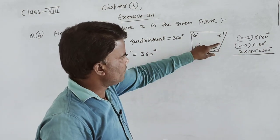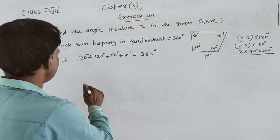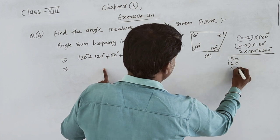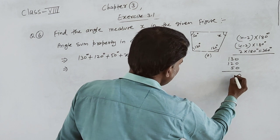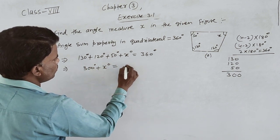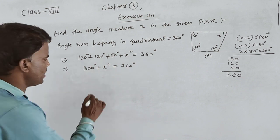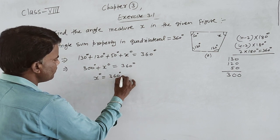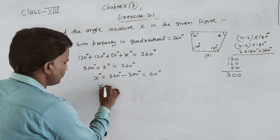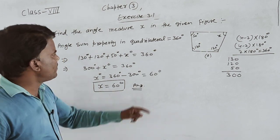Interior angles का sum 360 degrees है। हमने angle sum property use की। 130 plus 140 plus 50 को add करेंगे: 0+5+2=7, 7+3=10 — 300 degree। तो 300 degree plus X degree equal to 360 degree। X degree equal to 360 degree minus 300 degree — तो आएगा हमारे पास 60 degrees। X की value हुई 60 degrees।